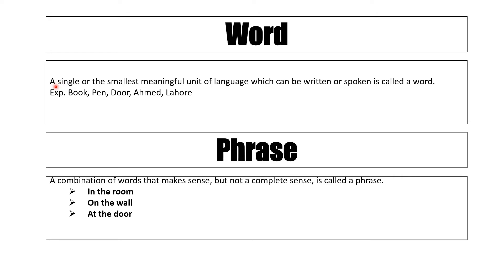A single or the smallest meaningful unit of language which can be written or spoken is called a word. For example, book — book جو ہے وہ ایک meaningful word ہے اور یہ letters کا مجموعہ ہے۔ اسی طرح pen، door، احمد and lohar — یہ تمام الفاظ word کی examples ہیں۔